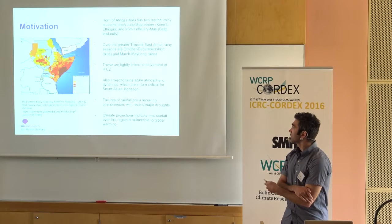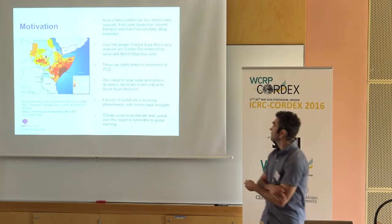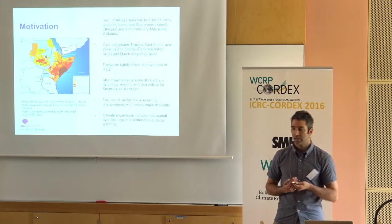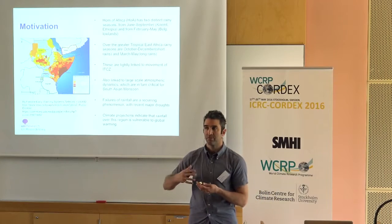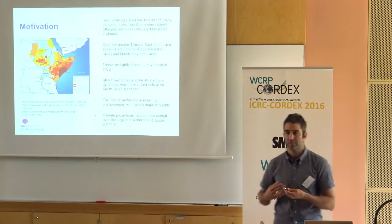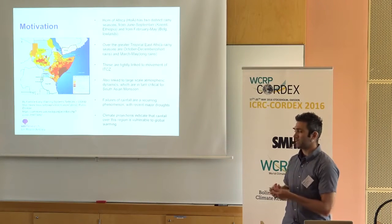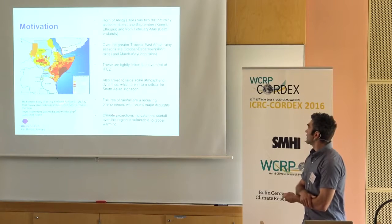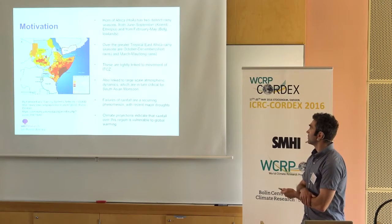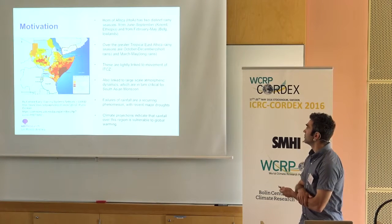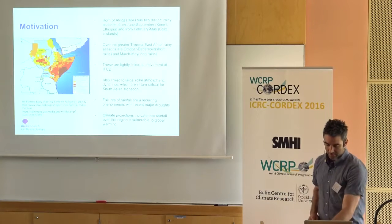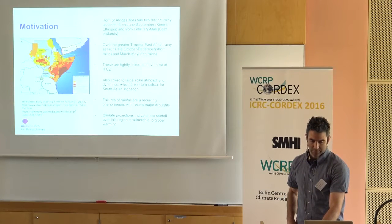These large-scale features are very important for the South Asian monsoon as well. This could motivate possible studies not just for how the various Cortex regions express teleconnections from outside the region, but also how the regions themselves feed back into potentially projecting onto other areas. The failures of rainfall in this area are a recurring phenomenon with major droughts — this figure is from the 2011 drought showing food scarcity. Climate projections for this area are quite uncertain, but it's potentially a highly vulnerable area.